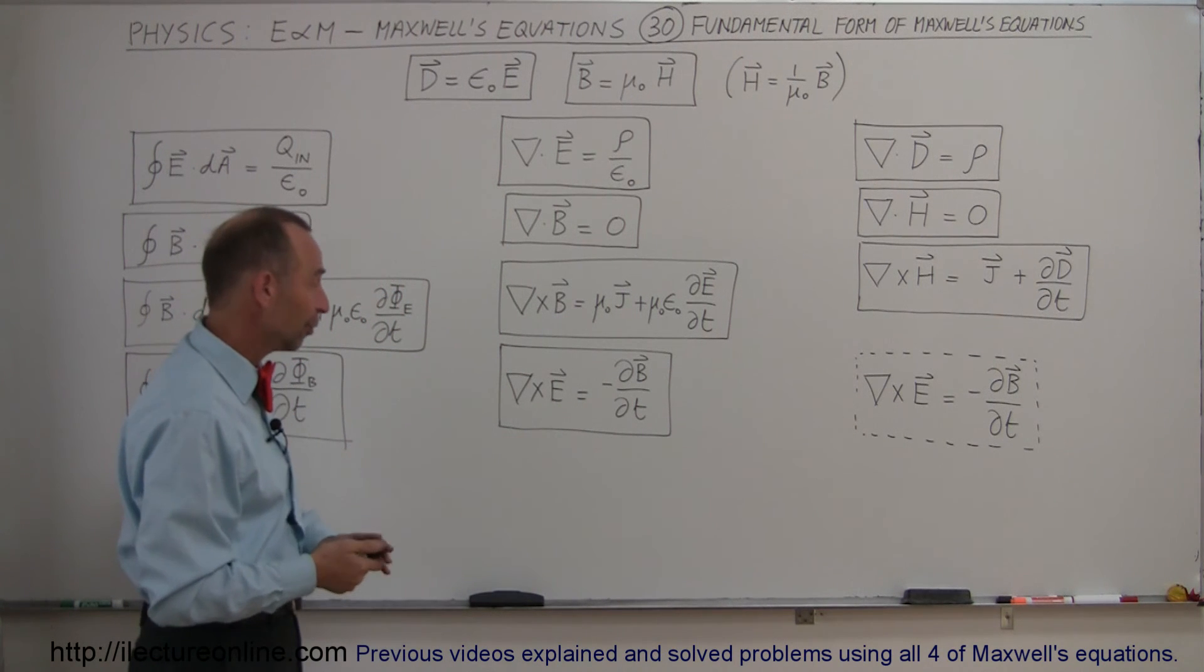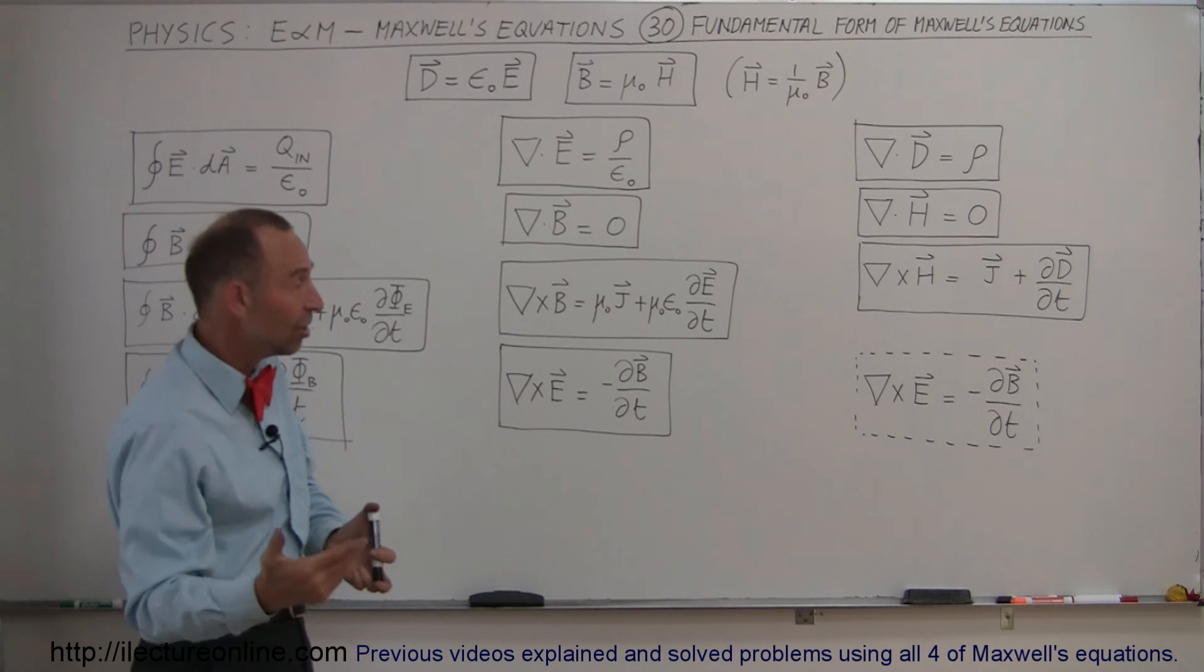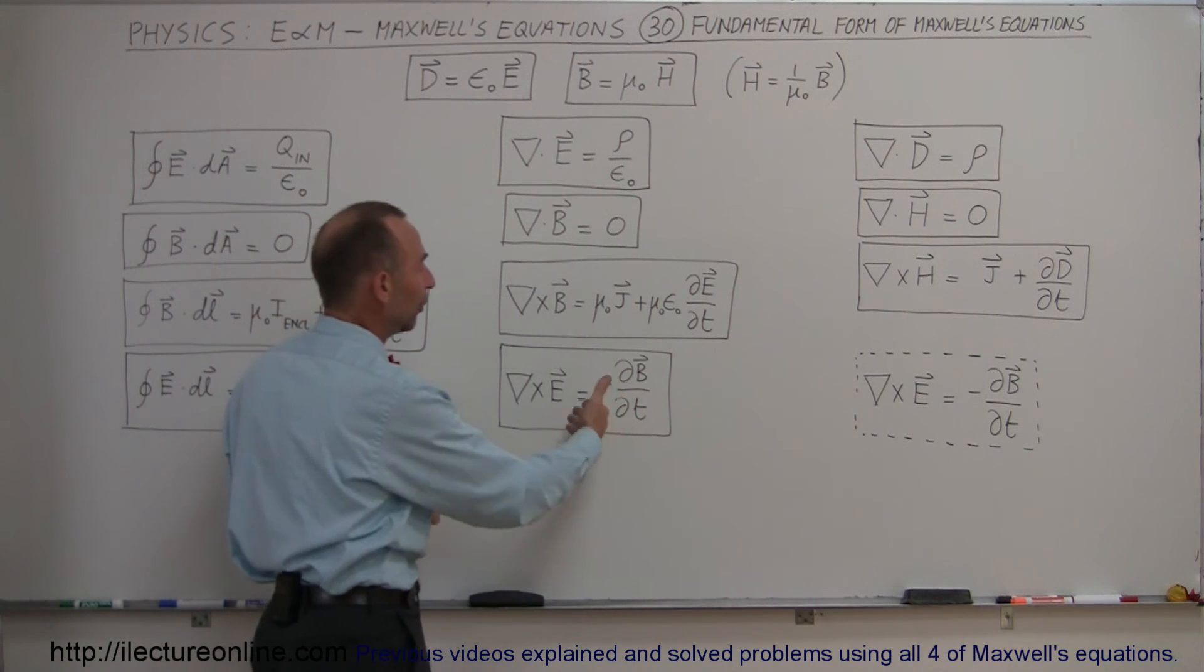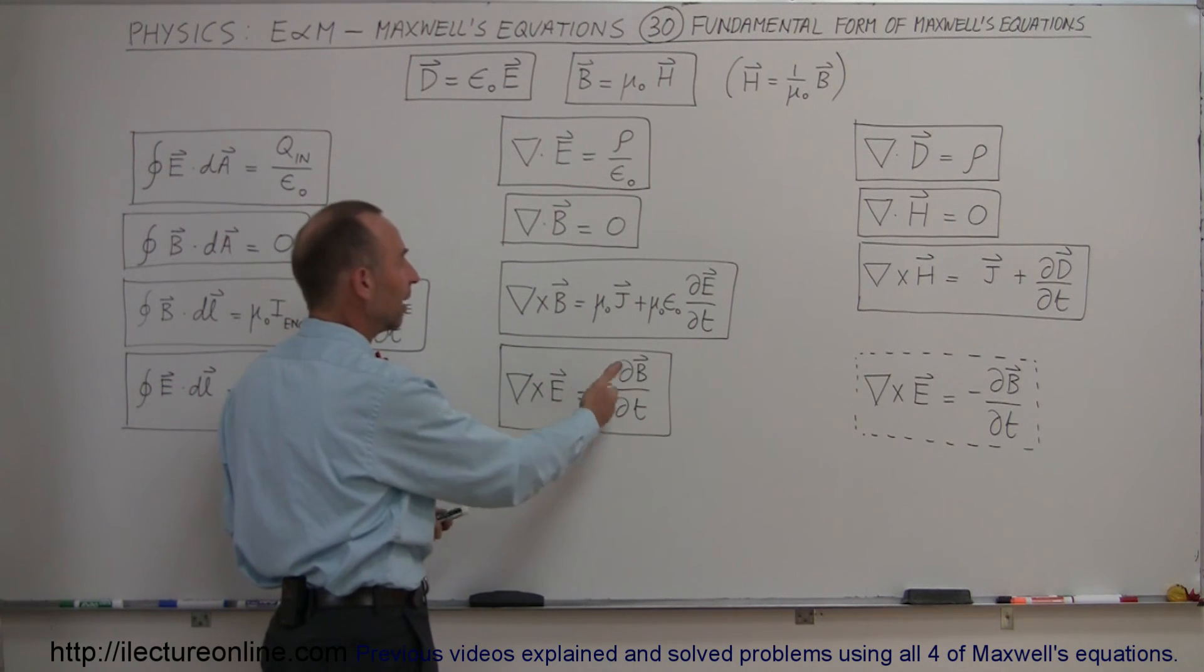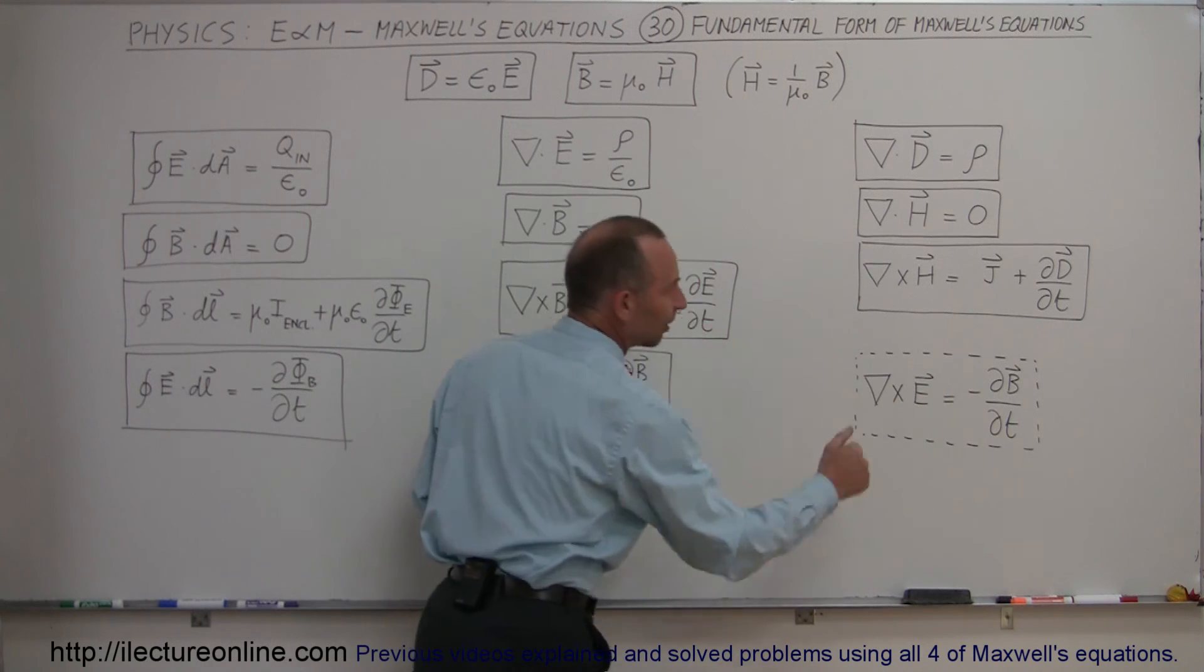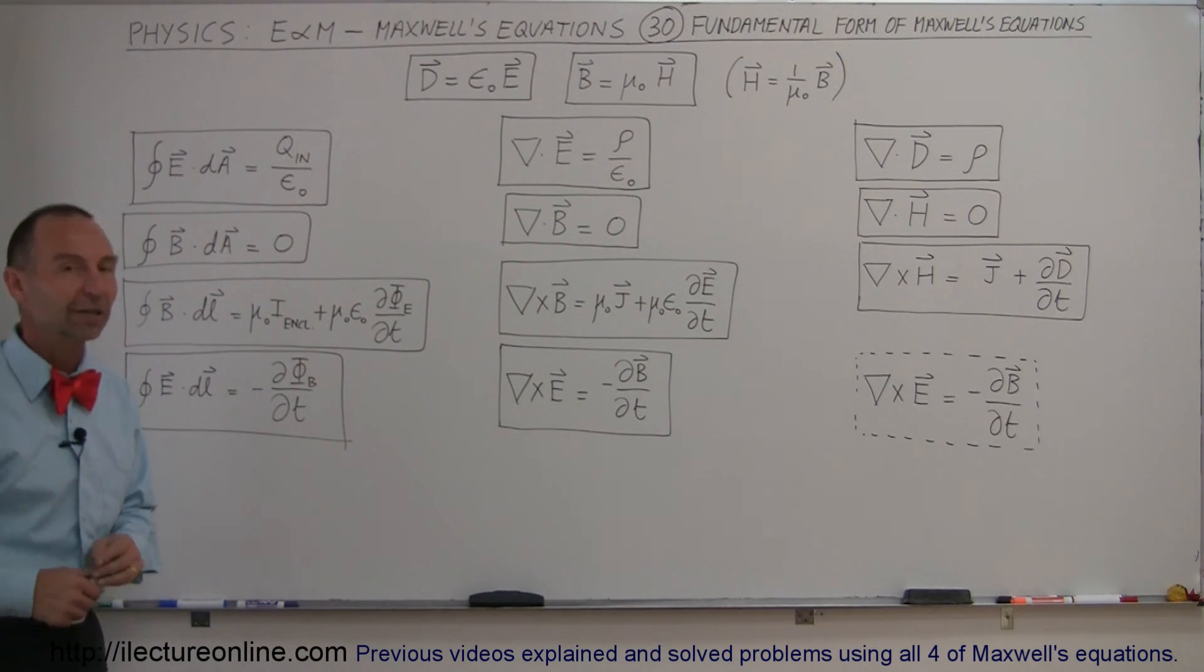Now, for the last one here, for Faraday's law, there was no point in changing it, because it did not include, already from the start, the mu sub naught and epsilon sub naught, so we left it in the same form, because that's as simple as we can possibly write it.